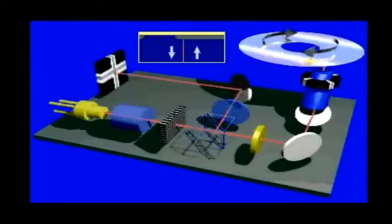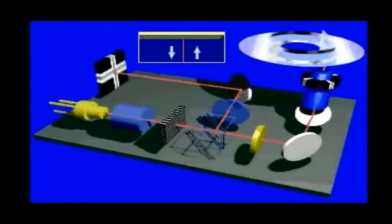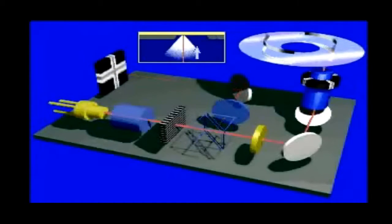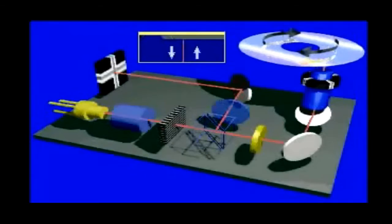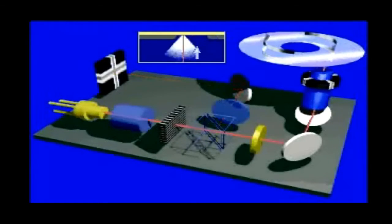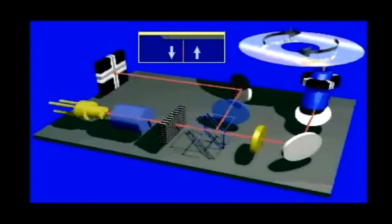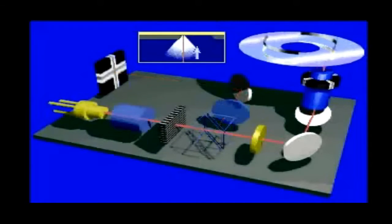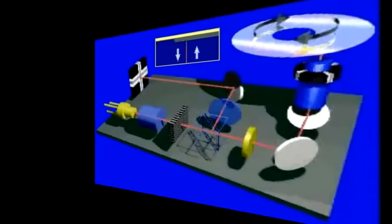When the laser beam hits a pit, the beam is diffused and not reflected back to the photodiode. When the laser beam hits a land, the beam is reflected back to the photodiode. The off and on signals passed on by the photodiode are then processed in ways that cause the display of sound, images, or text.